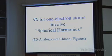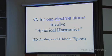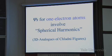Chladni didn't solve his problem mathematically about how plates vibrate, but there were great mathematicians working on this — like Bernoulli, Lagrange, and Euler, who not only made a Communist Germany stamp but also a Swiss ten-franc note. For one-electron atoms, now we're going from one dimension into three dimensions for a real atom. The solutions involve what are called spherical harmonics, and they're 3D analogs of Chladni's 2D figures. These mathematicians could work in three dimensions as well as two.